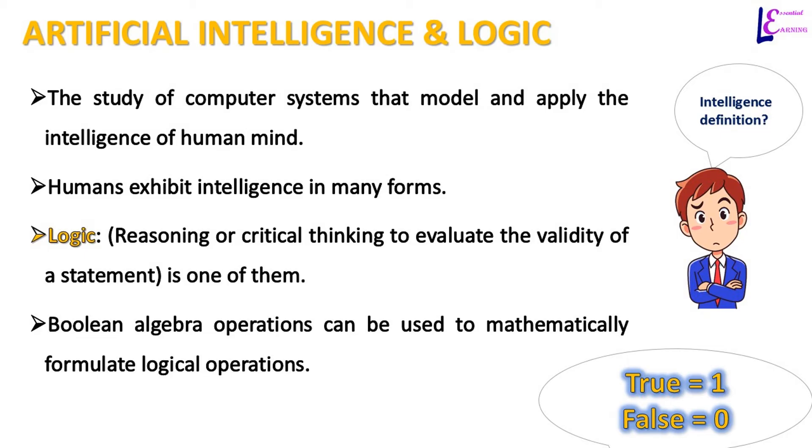Artificial intelligence in general sense is the study of computer systems that model and apply the intelligence of human mind. Of course, humans exhibit intelligence in many forms. It can be the ability to learn and apply knowledge to manipulate or adapt to environment, or ability to comprehend and the ability to reason or have abstract thought.